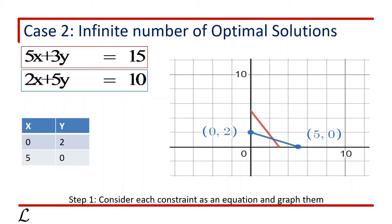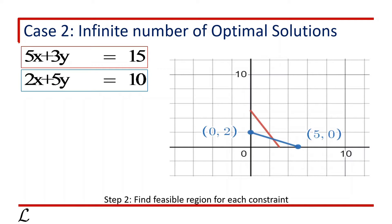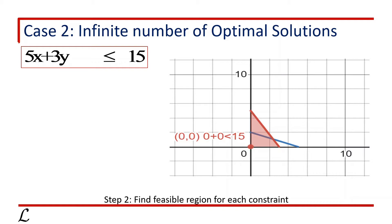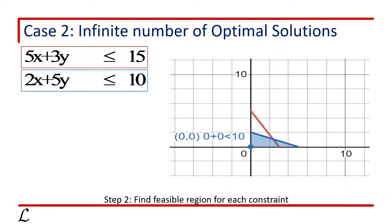We can draw a line connecting these two points as well. Now Step 2 is to find the feasible region for each constraint. For the first constraint, 5x plus 3y less than or equals to 15, we consider the point (0, 0). Putting x equals 0 and y equals 0 gives 0 plus 0 less than or equals to 15, which satisfies the constraint. So the feasible region for the first constraint is the region from the line towards this point, restricted by the non-negativity constraint and shown in red. Similarly for the second constraint, 2x plus 5y less than or equals to 10, using point (0, 0) gives 0 plus 0 less than or equals to 10, which is also satisfied. So the feasible region for the second constraint is also the region towards (0, 0), shown in blue.